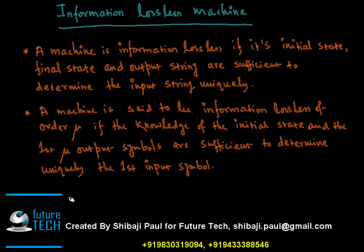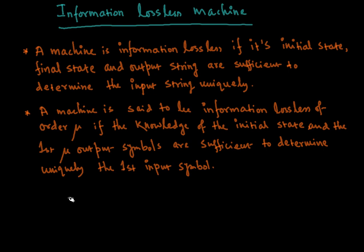A machine is information lossless if, given the initial state, the final state, and the output string, we can uniquely determine the input string. A machine is said to be information lossless of order mu if the knowledge of the initial state and the first mu output symbols are sufficient to determine uniquely the first input symbol. Given mu output symbols and the initial state, we can uniquely determine the first input symbol — that is an information lossless machine of order mu.